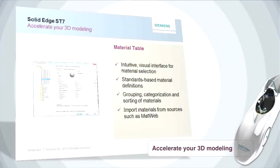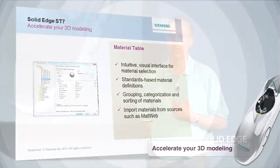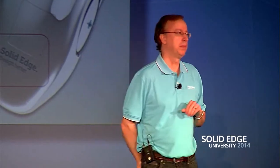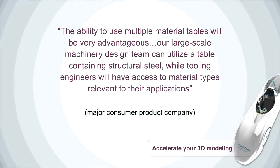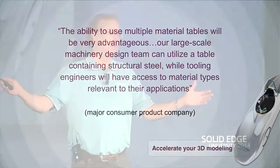The material table is completely different from ST6 — very intuitive, visual, and standards-based. Materials can be grouped so different people use different materials, and there's a powerful ability to import materials from other sources such as MatWeb. One of our beta customers — a major consumer products company whose products include soap, detergent, and diapers — builds large-scale machinery and is very excited about the ability to segregate materials used in machinery versus tooling.